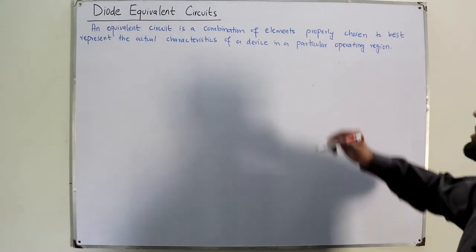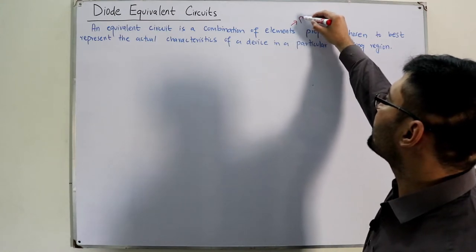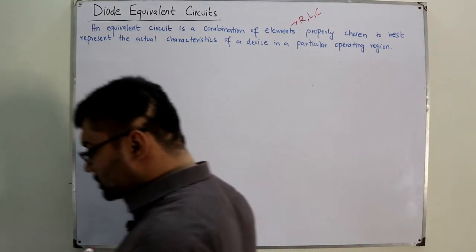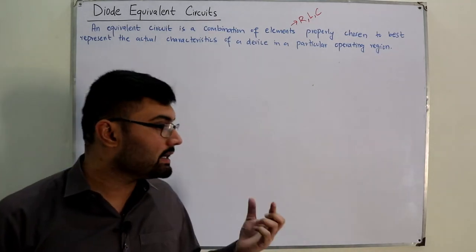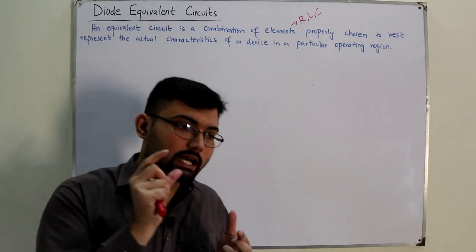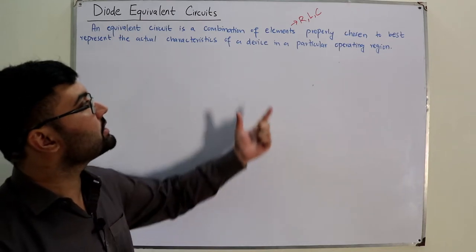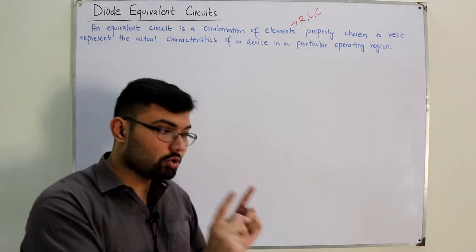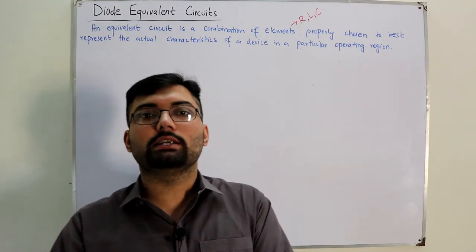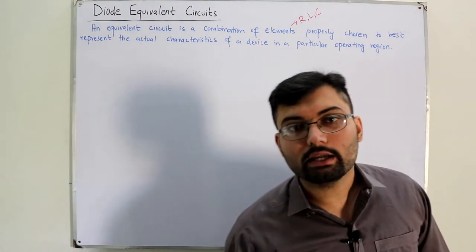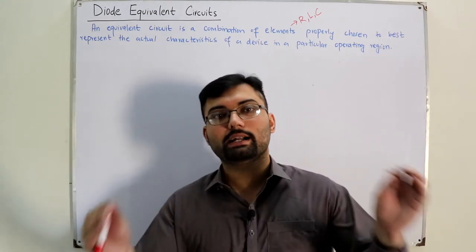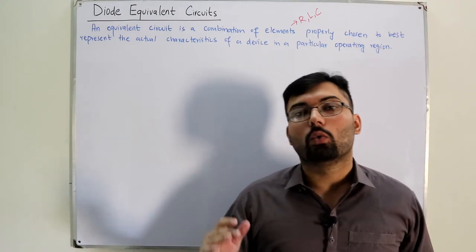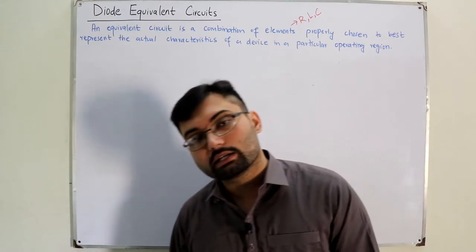What would be that combination of elements? The combination of elements would be different combinations of resistors, inductors, and capacitors. What we do in this case is replace the diode by a different combination of these elements in a particular given circuit, where those elements would show the exact characteristics in that region — the same behavior the diode would show.